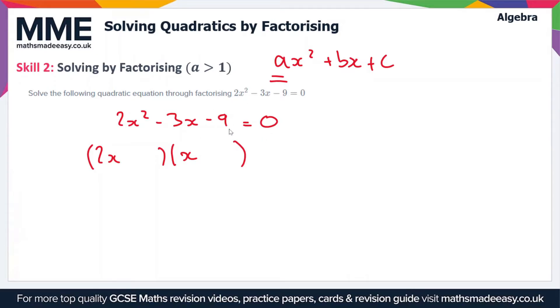Next thing we have to look at is the fact that c is negative. So if c is negative, then one of the numbers in the brackets is going to be positive and one of them is going to be negative, seeing as though a positive times a negative is the only way you can get a negative number for c.